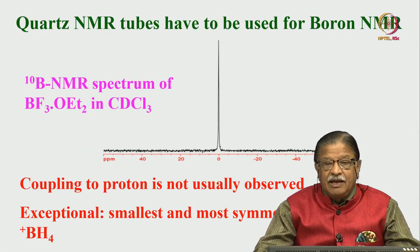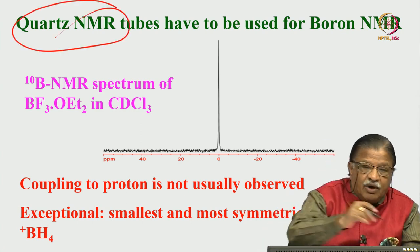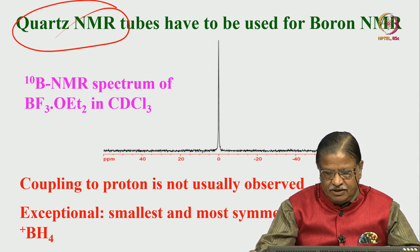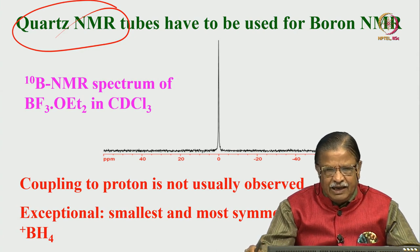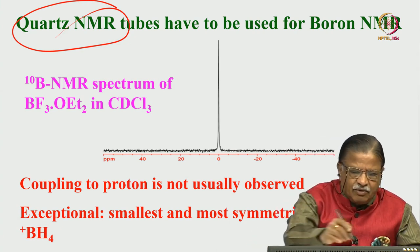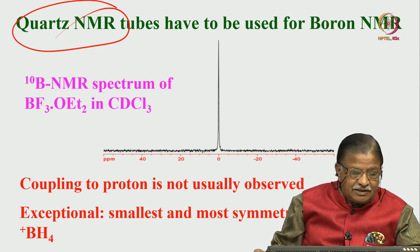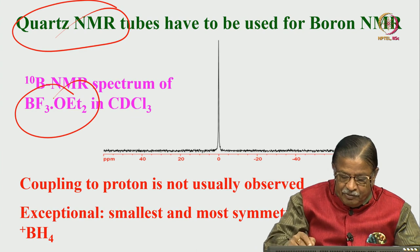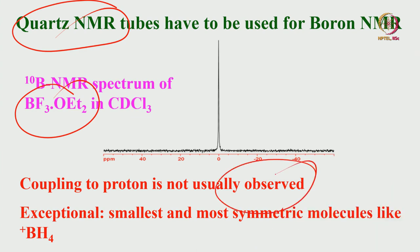One important practical note: if you want to do boron NMR, you must use quartz NMR tubes. Do not use normal tubes, because they are made of borosilicate glass and you will get a signal from the NMR tube itself. This is a caution — when doing boron NMR, always use quartz NMR tubes. For BF3·OEt2, coupling to proton is not usually observed. Only in exceptional cases like the BH4 molecule can you see boron-proton coupling.